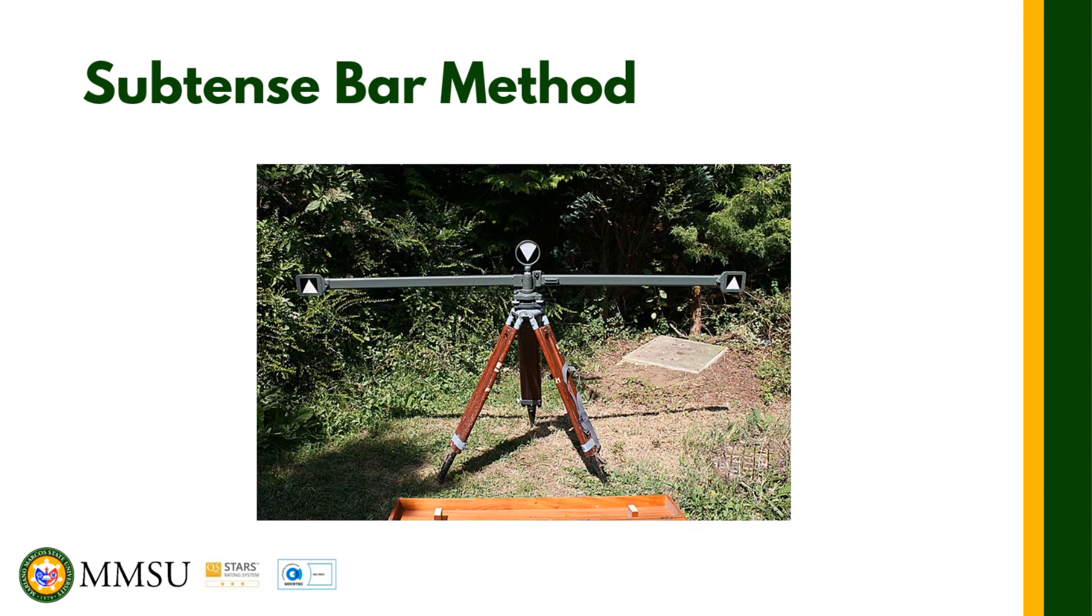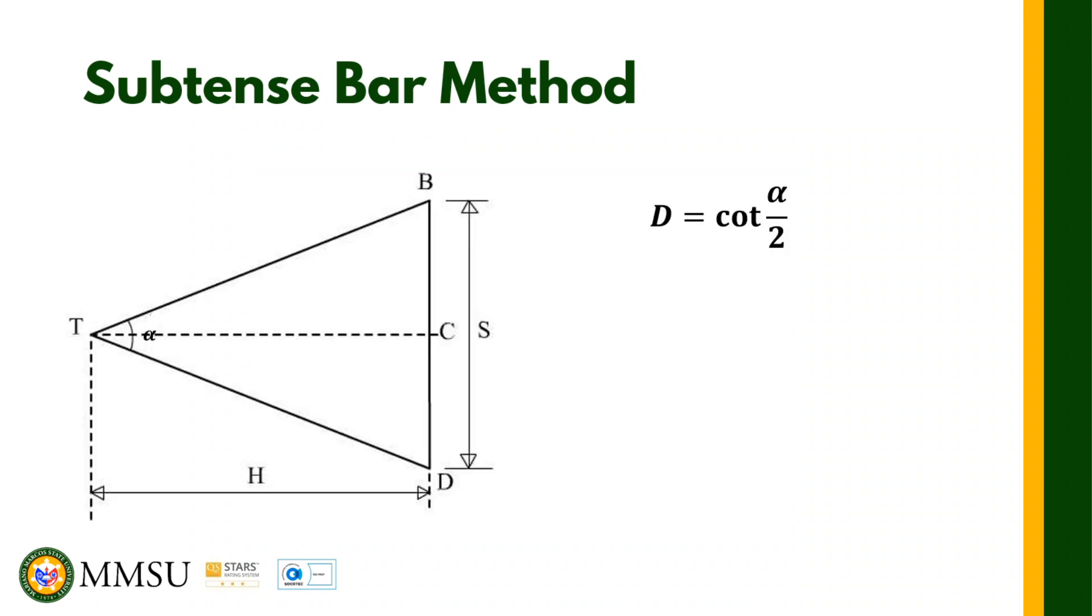The subtense bar looks like this one in the slide. The plan view of a typical subtense measurement is shown. Point T is where your total station is located, and from B to D is the subtense bar. Since the subtense bar is two meters long, this is one meter and this is one meter long.